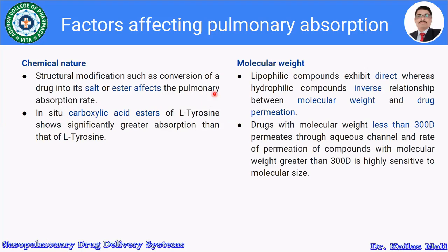Molecular weight is yet another important factor affecting pulmonary absorption. Lipophilic compounds exhibit a direct relationship, whereas hydrophilic compounds exhibit an inverse relationship, between molecular weight and drug permeation. Drugs with a molecular weight less than 300 Dalton permeate through aqueous channels, while the rate of permeation of compounds with molecular weight greater than 300 Dalton is highly sensitive to molecular size.